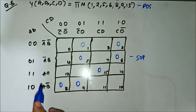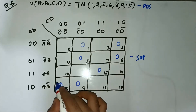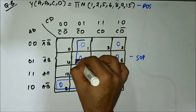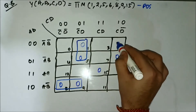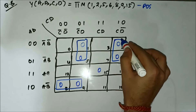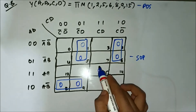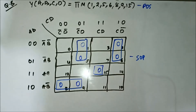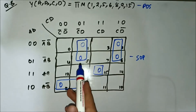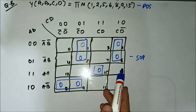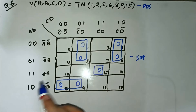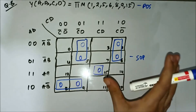Now we have to form the groups. You can see there are straightforward pairs that can be formed — one pair here, one pair here, and a third one. For this remaining cell, we have to form a single-cell group because there is no other occupied cell adjacent vertically or horizontally to it. So there are 4 groups here.